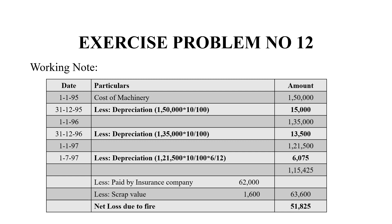The insurance company paid only Rs. 62,000, and from the machine we get a scrap value of Rs. 1,600. Adding these together gives Rs. 63,600. Since the asset was worth Rs. 1,15,425 at the time of the fire, the balancing amount — Rs. 51,825 — is a loss on that asset.